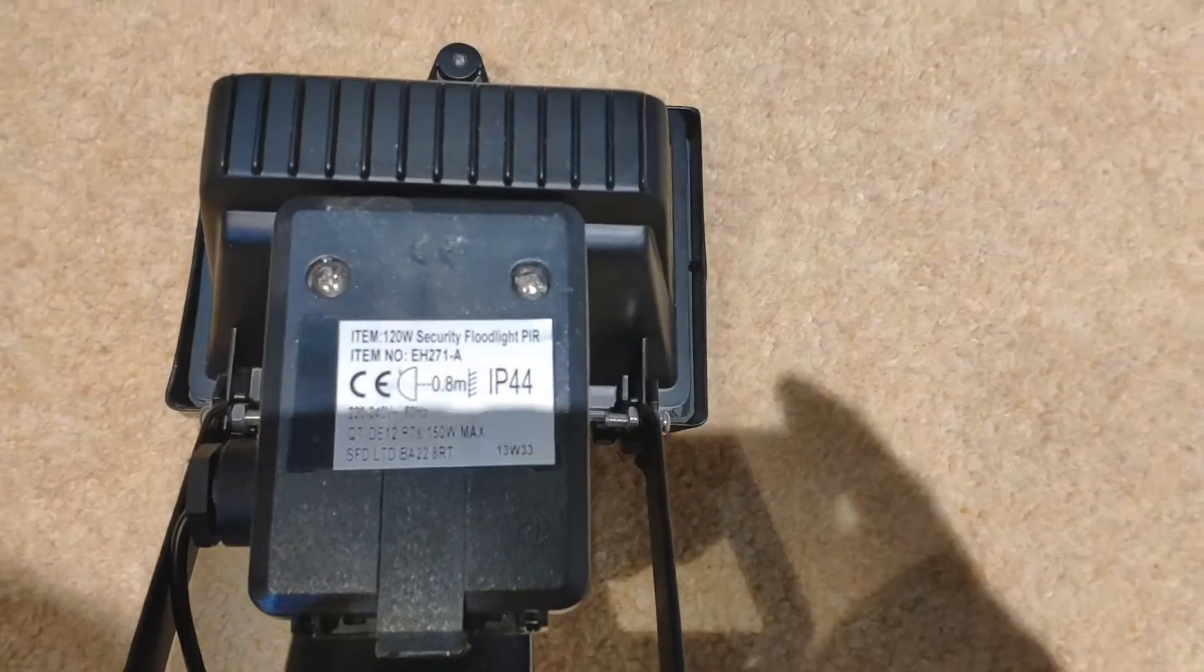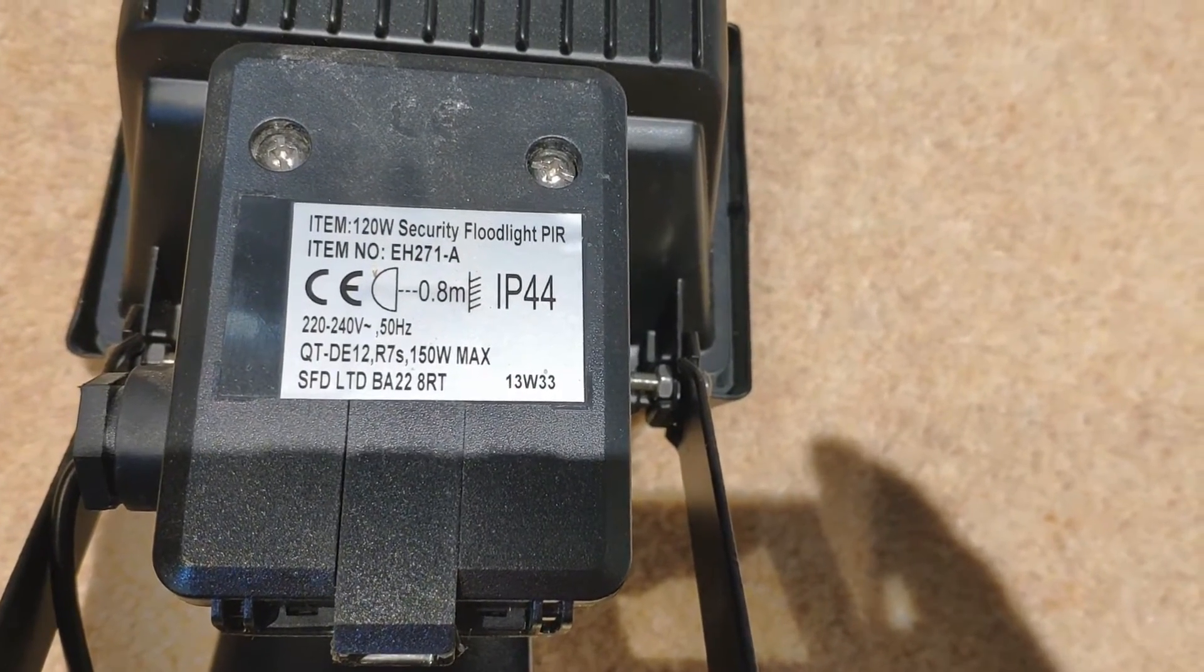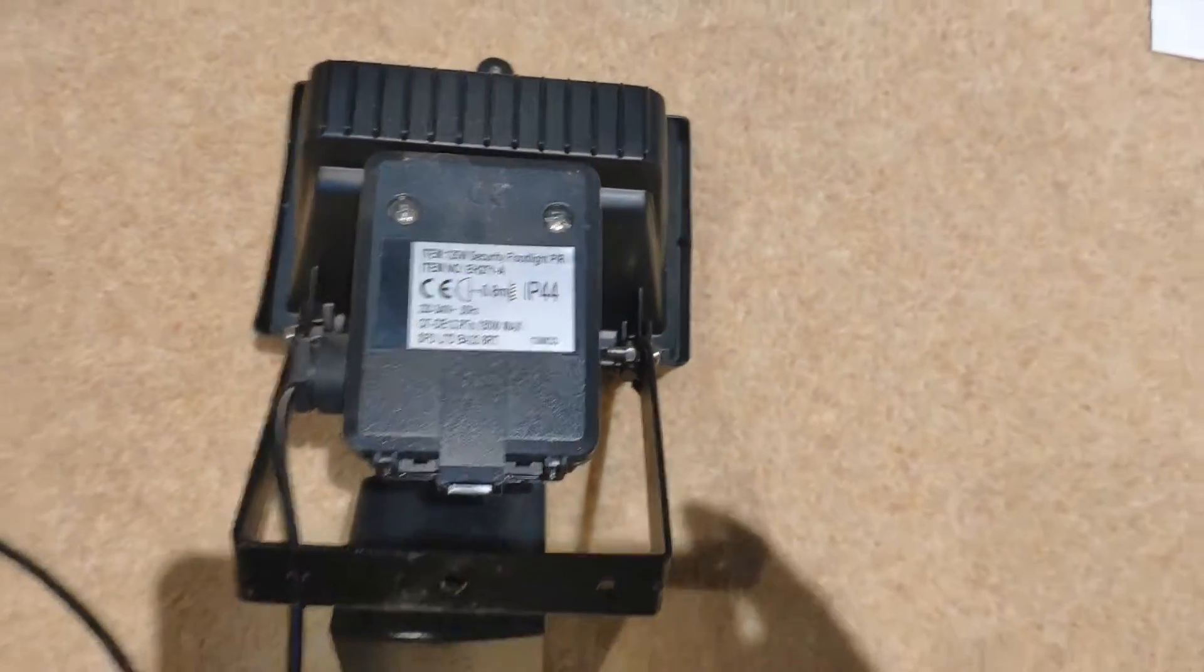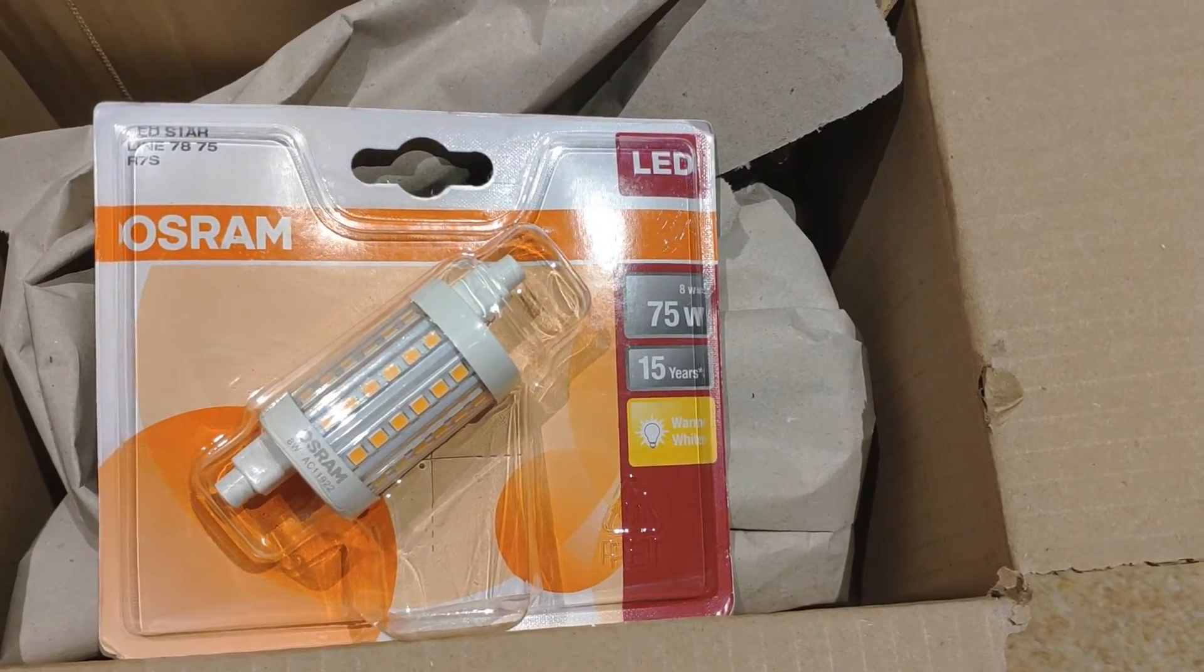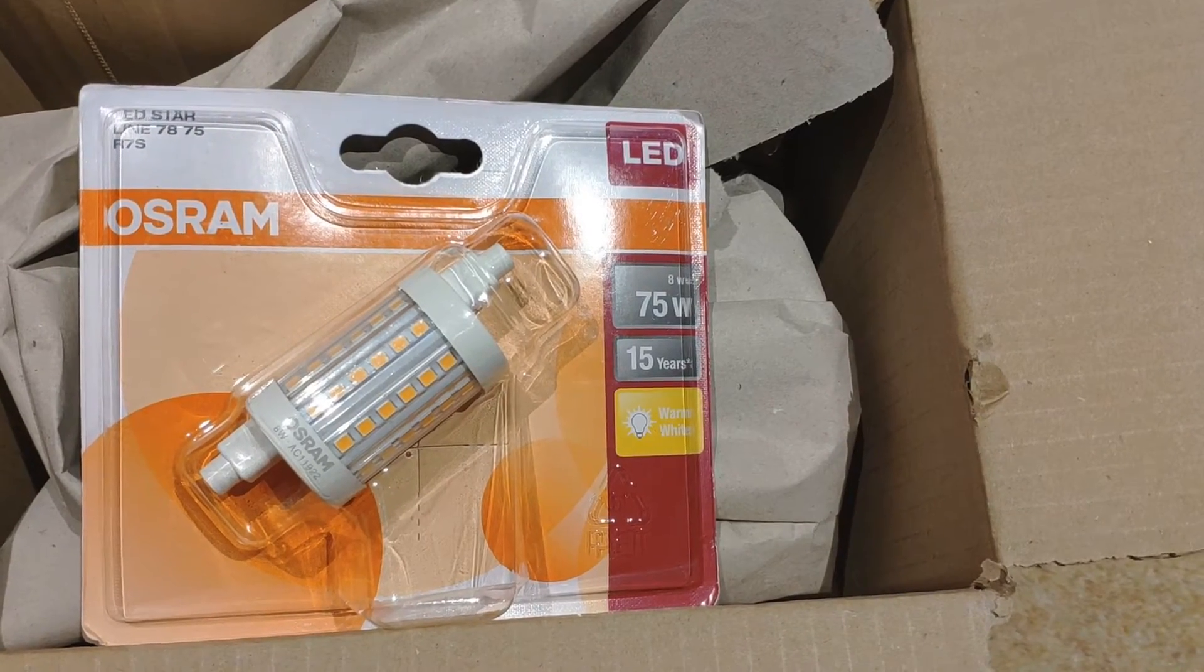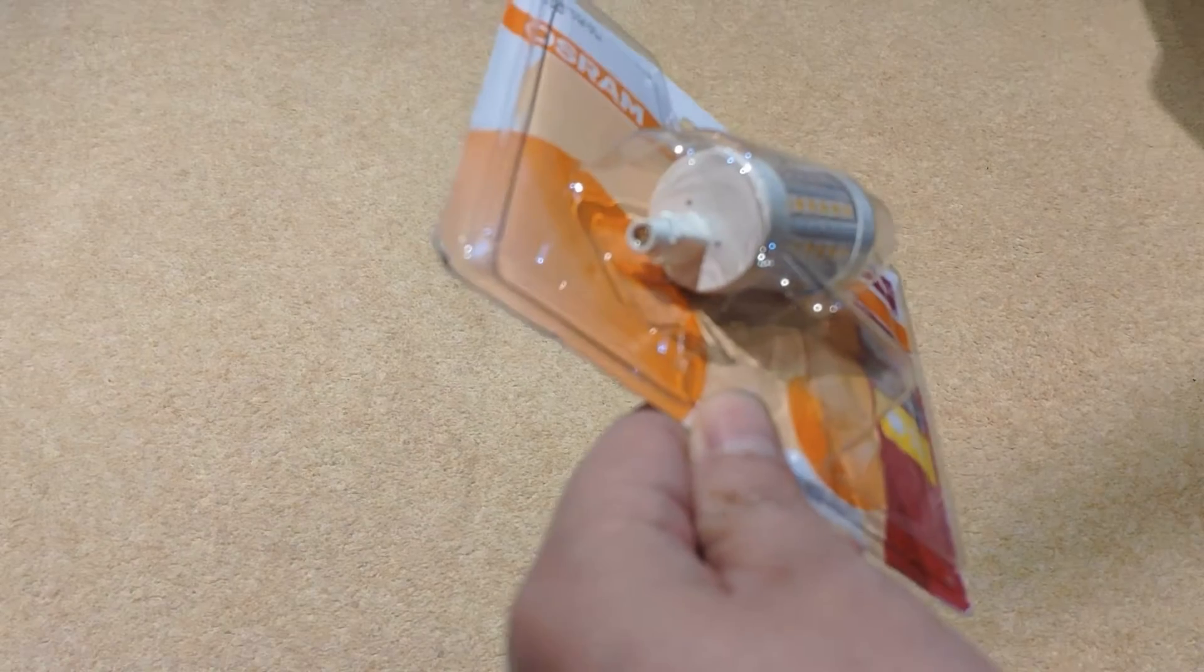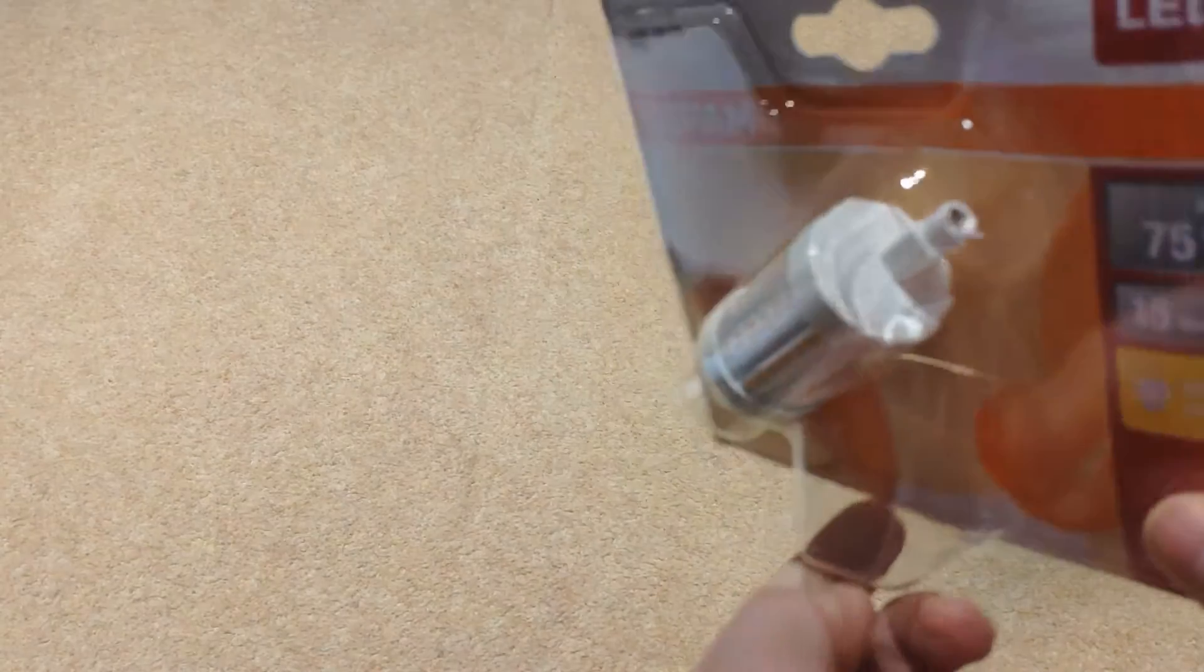Label shows the light uses R7S bulb up to 150W. I'd like to take the chance to upgrade the halogen bulb to LED to save power. After some research, I ordered the Osram 8W bulb, which is equivalent to 70W halogen bulb.